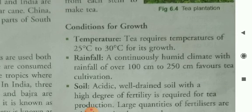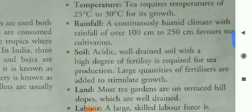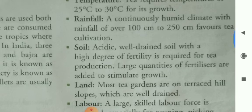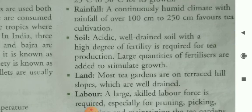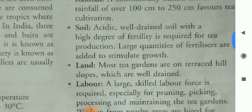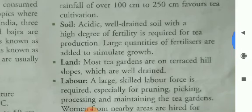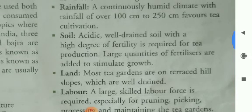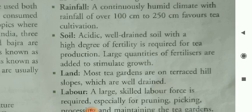Now the conditions required for tea plantation. Temperature: tea requires temperatures of 25°C to 30°C for its growth. Rainfall: a continuously humid climate with rainfall of over 100 cm to 250 cm favors tea cultivation.